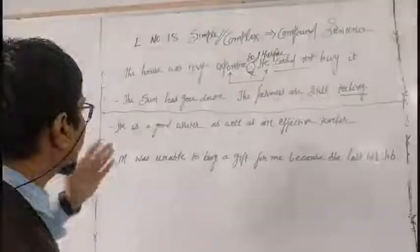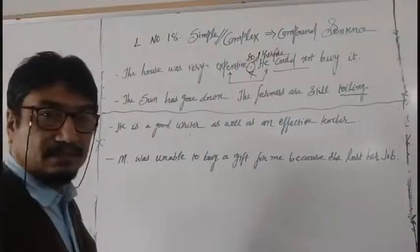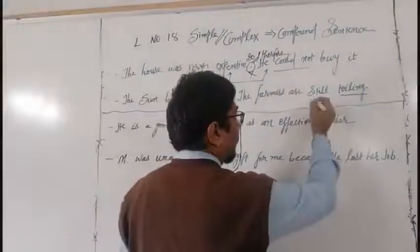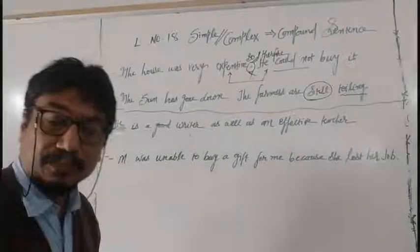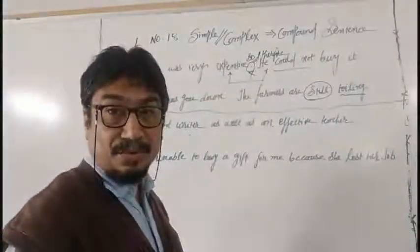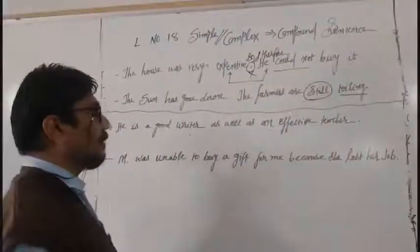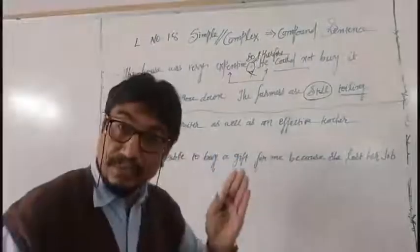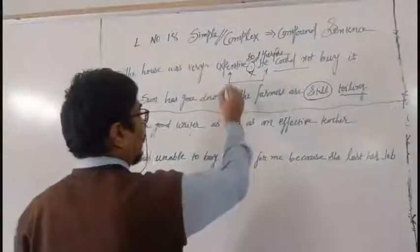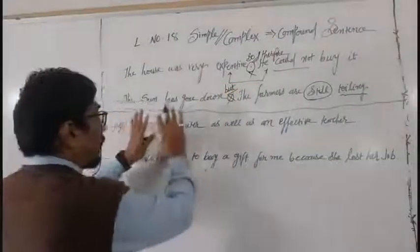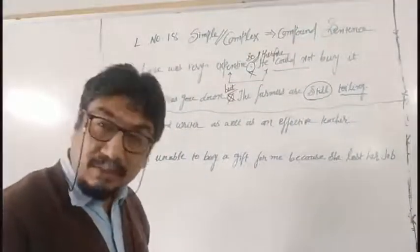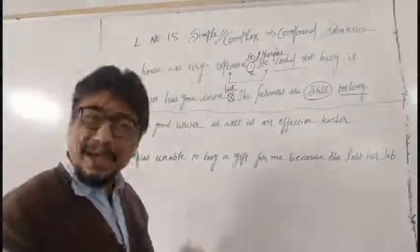Next: 'The sun has gone down. The farmers are still working in the field, sowing the seeds.' If you want to convert it into compound, simply remove the full stop and write: 'The sun has gone down but farmers are still walking and sowing in the field.' What is there? It shows total contrast.